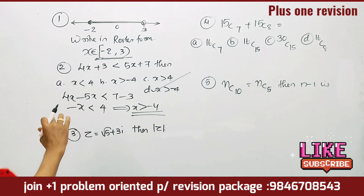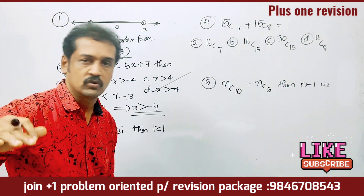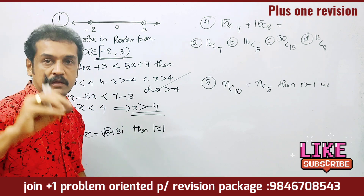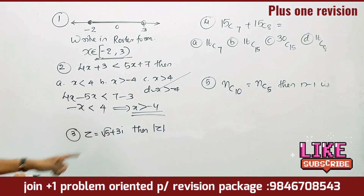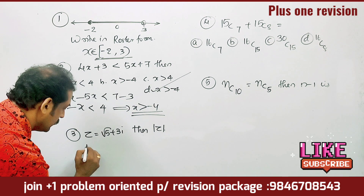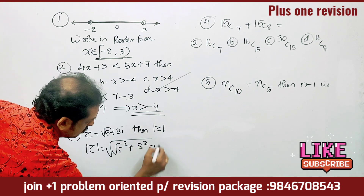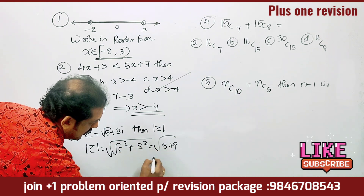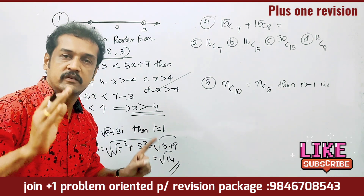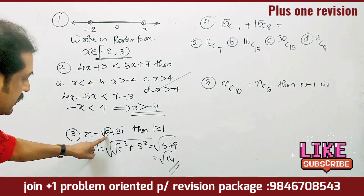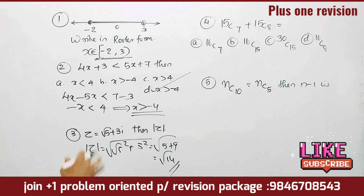Next: Z equals √5 + 3i. Find the modulus of Z. The modulus of Z is equal to the root of (real part)² + (imaginary part)², which is √(√5² + 3²) = √(5 + 9) = √14. The answer is √14.